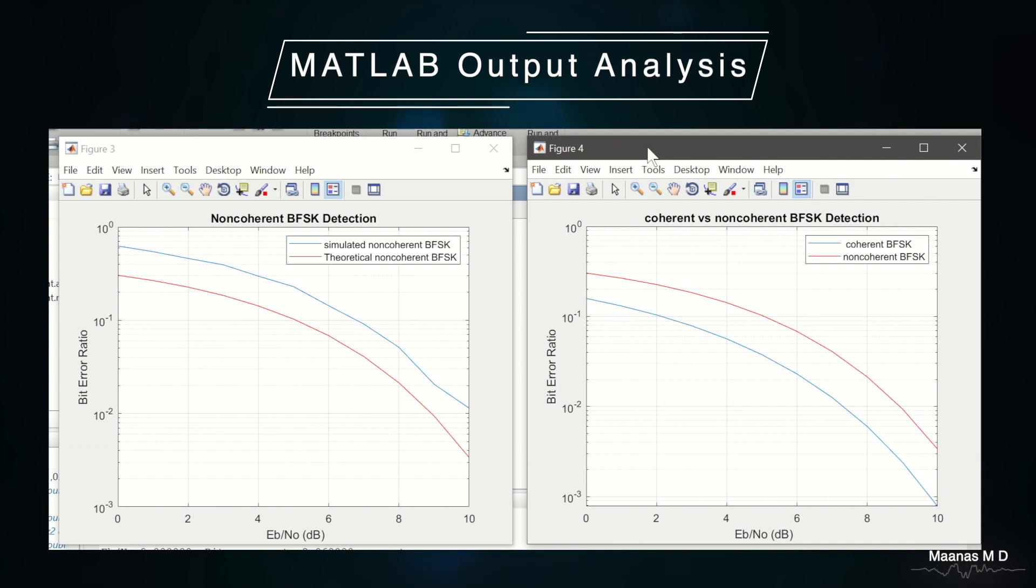The coherent probability of error plot is in blue color and the non-coherent is in red color. The blue line is below the red line. It clearly states that the probability of error for coherent is much less than the probability of error for non-coherent detection. And the gradual difference keeps increasing as the SNR value increases.